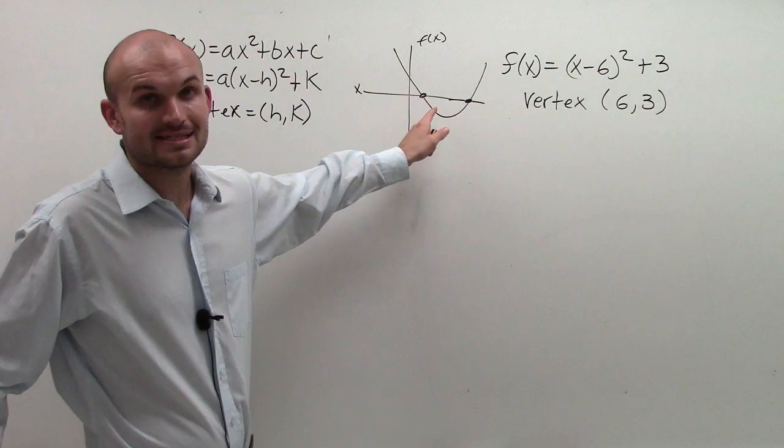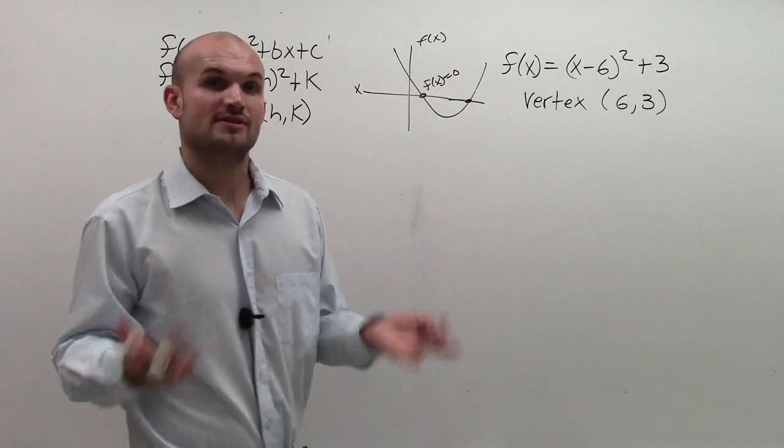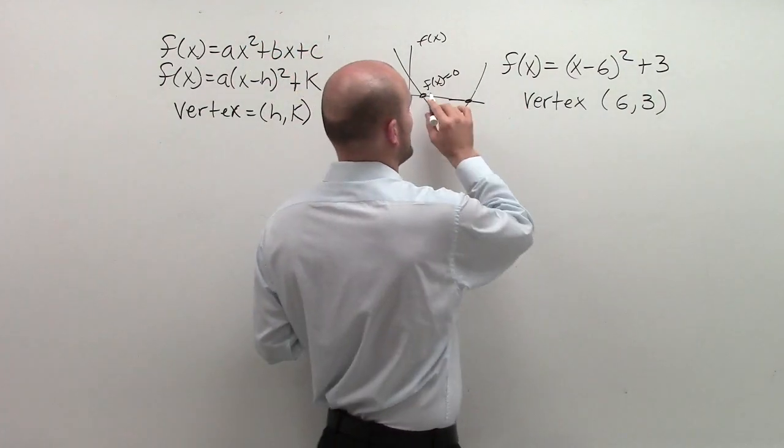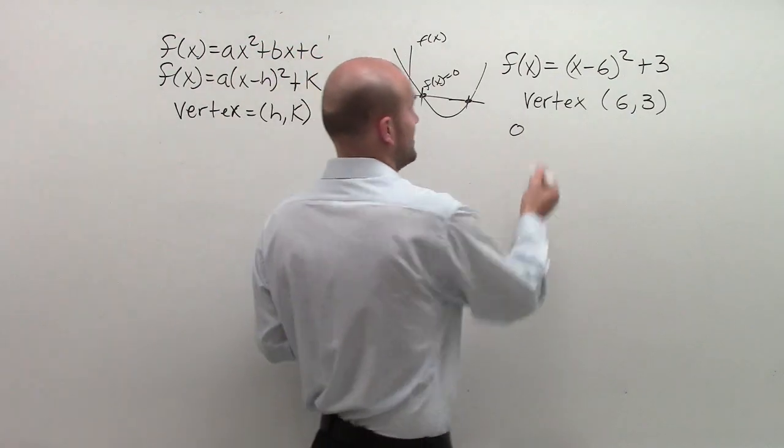Remember where a graph crosses the x-axis, you have f(x) is equal to zero. So to solve for my values of x where it crosses, I simply just need to plug in zero in for f(x).